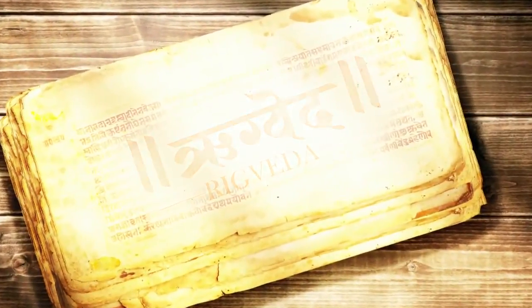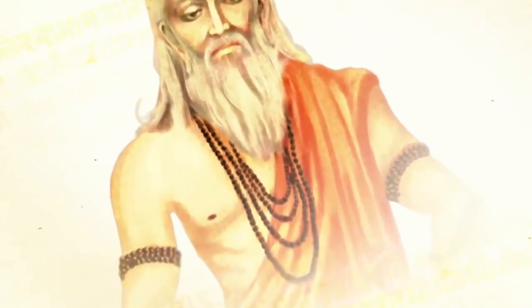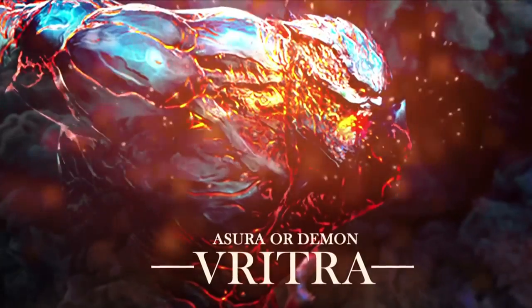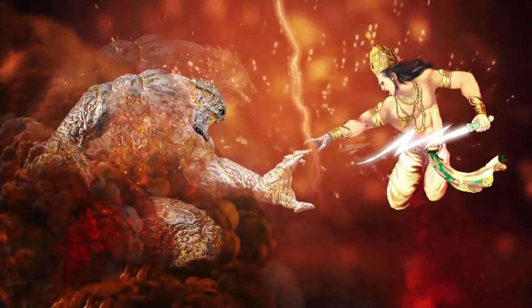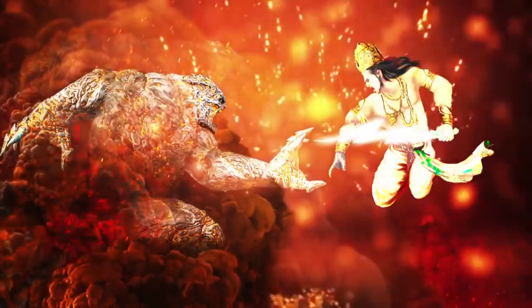In Rig Veda hymns 1.32 and 1.33, Rishi Hiranyastupa Angirasa describes a battle between two opposing forces inside the cosmic womb as a battle between Indra, the Divine Mind, and Vritra, or the clouds sticking together. Vritra, the resistive force, holds back and opposes the seeds of mind, or the externally pushing force of Indra, from spreading and acting.